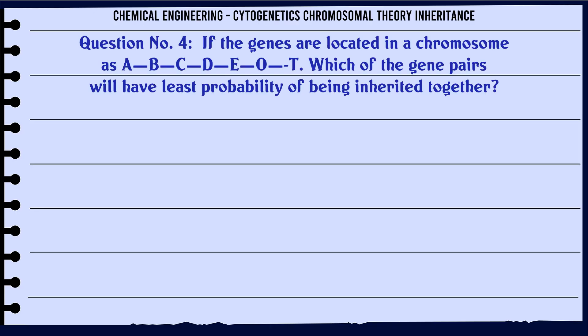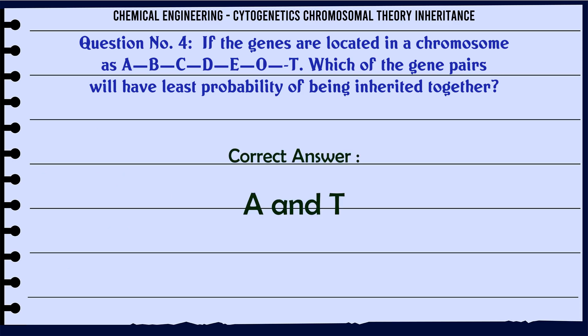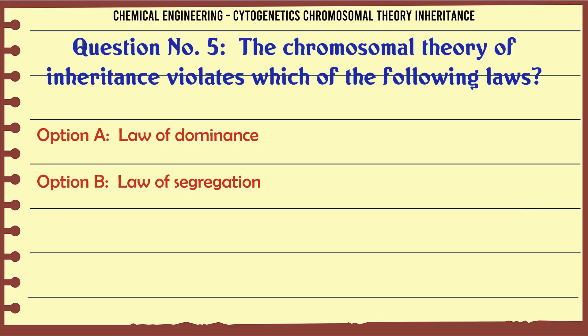If the genes are located in a chromosome as A, B, C, D, E, O, T — which of the gene pairs will have the least probability of being inherited together? A: C and D. B: A and T. C: A and B. D: O and T. The correct answer is A and T.